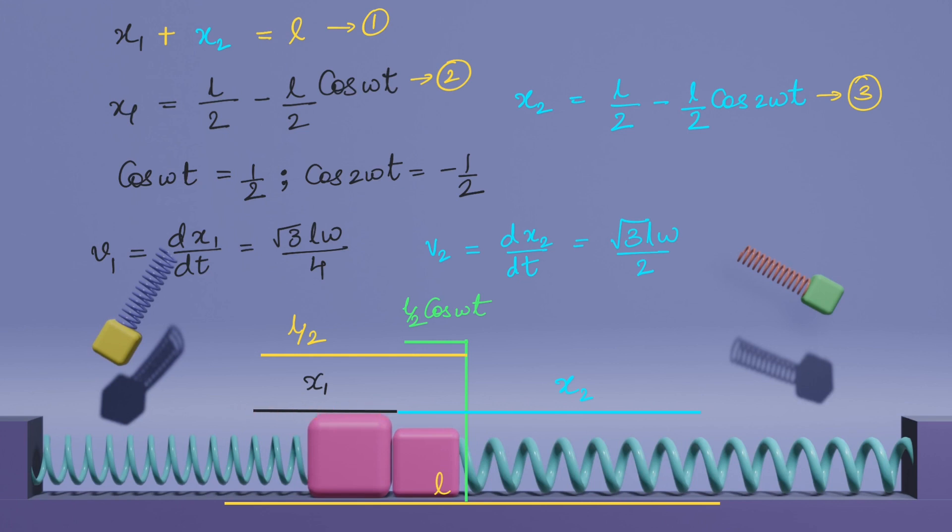See, this is x1. So dx1 by dt will be the speed of this block. So we can find the speed of this first block v1 equals dx1 by dt, which is equal to root 3 L omega by 4. Once we keep these values, the speed of this block during collision is v2 equals root 3 L omega by 2.